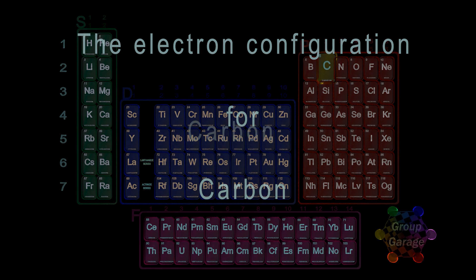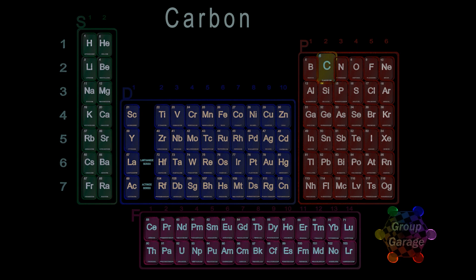First, find carbon in group 14 in the table's P block. Highlight carbon and all the elements in the row to the left.